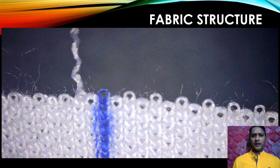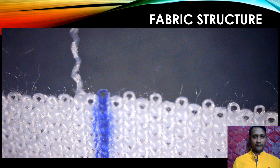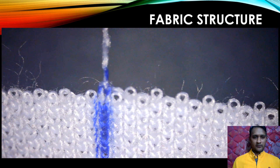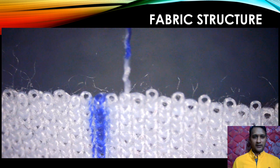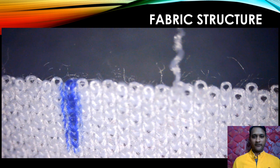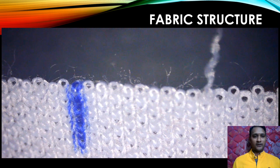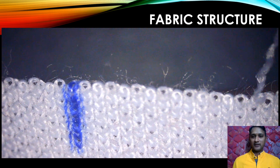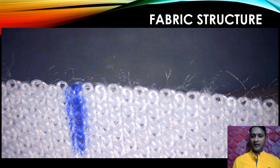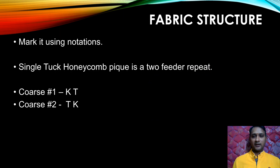Now, I am going to unravel course number 2. After that vertical line, I could see tuck followed by knit, tuck followed by knit, tuck followed by knit. On top of that first needle — the previously knitted loop — I could see the half moon structure, so it is a tuck loop. We can notify course number 2 as tuck knit.